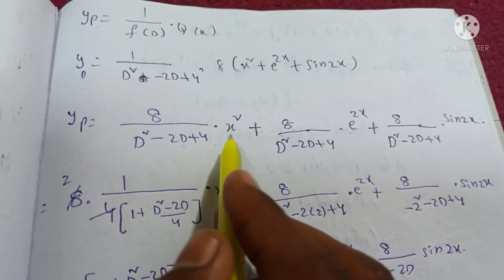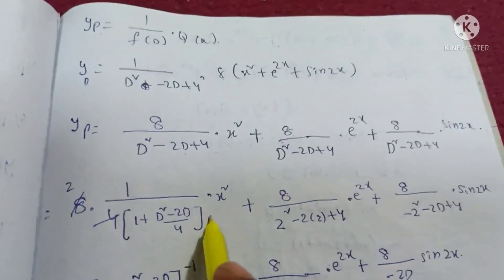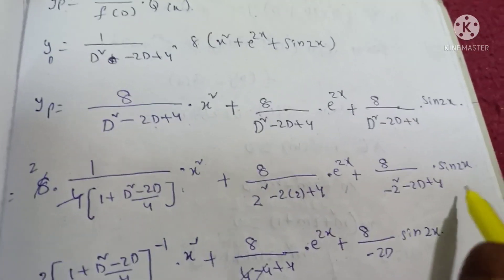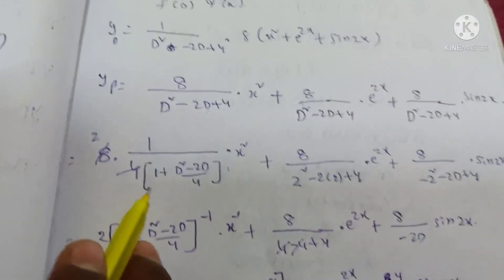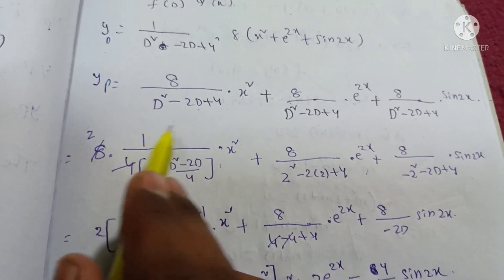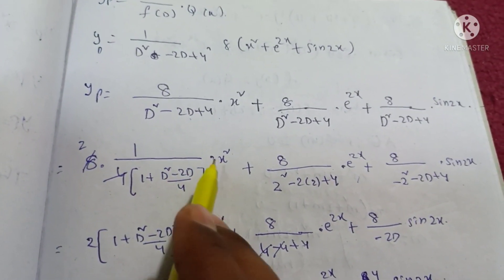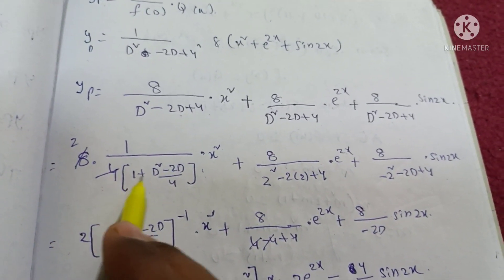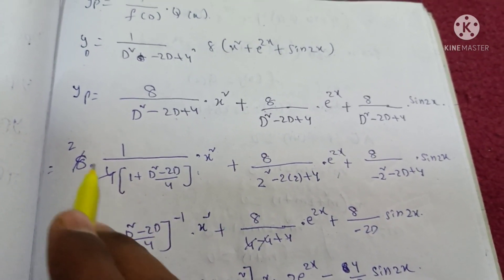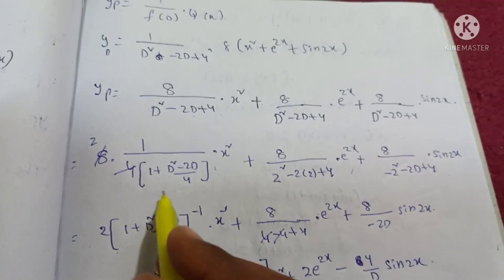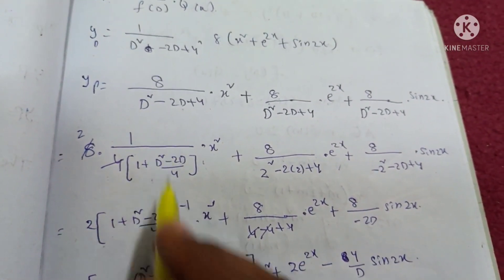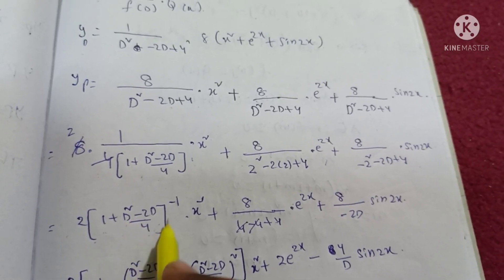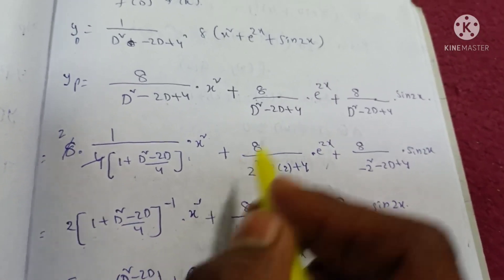So yp equals 1 over (d squared minus 2d plus 4) into [8x squared plus e power 2x plus sin 2x]. We split: 8x squared uses the third method (polynomial), e power x uses the first method, and sin x uses the second method. For the x squared term, take 4 common: (1/4) into 1 over (1 plus (d squared minus 2d)/4) into 8x squared.